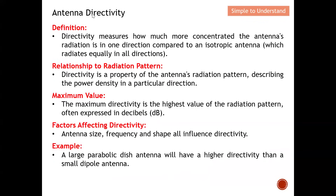Let's come to the definition of antenna directivity. We need to know these two things separately: directivity and effective area. The antenna directivity measures how much more concentrated the antenna radiation is in one direction compared to an isotropic antenna. An isotropic antenna radiates equally in all directions, so directivity compares the concentration in a certain direction relative to that isotropic reference.